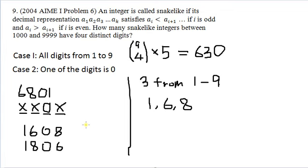What about if we started with a 6? If we started with a 6, we can't go to 1, but we can go to 8. And then that determines 0 and 1. And there's no way to start with 8, because going from 8, we can't get to something bigger. So what we notice here is that for every way to choose three digits from 1 to 9, we can make three snakelike integers.